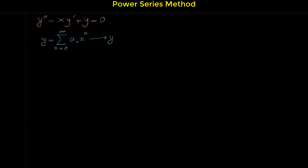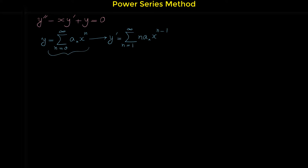From this we have to find y prime and y double prime. The derivative of the power series is sigma from n equals one to infinity. The derivative of the general term aₙ xⁿ is n aₙ x to the n minus one. The reason we start n from one is that the first term of the power series is a constant, and the derivative of a constant is zero.